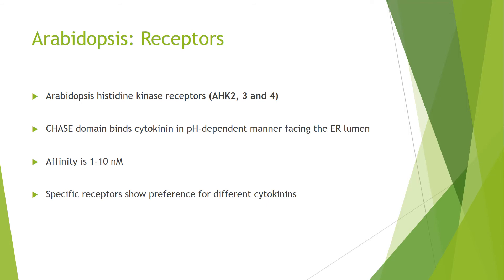For plant-specific detail, Arabidopsis has three histidine kinase receptors: AHK2, 3, and 4. They use a CHASE domain to bind cytokinin, and this binding is in a pH-dependent manner — which is important given that the receptor ligand binding domain is in the ER lumen, and the endomembrane system of plants has a pH gradient. The affinity of these receptors for cytokinin is in the order of 1 to 10 nanomolar, equivalent to endogenous levels seen in vivo. The specific receptors show preference for different cytokinins, providing context-dependent specificity in the cytokinin response.